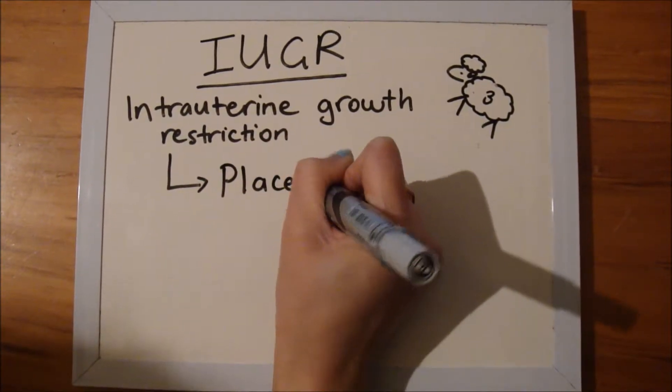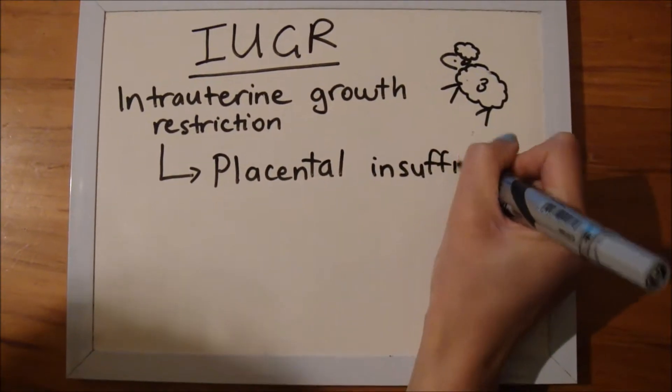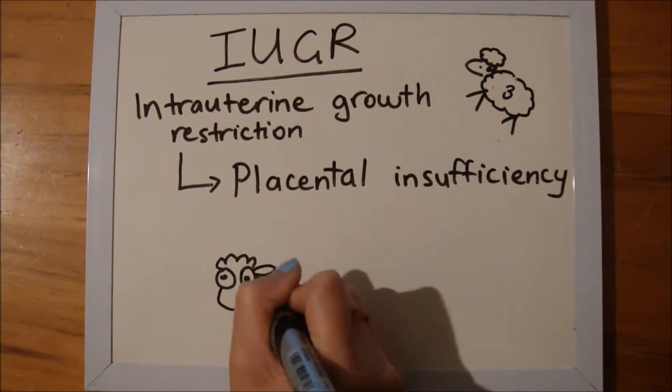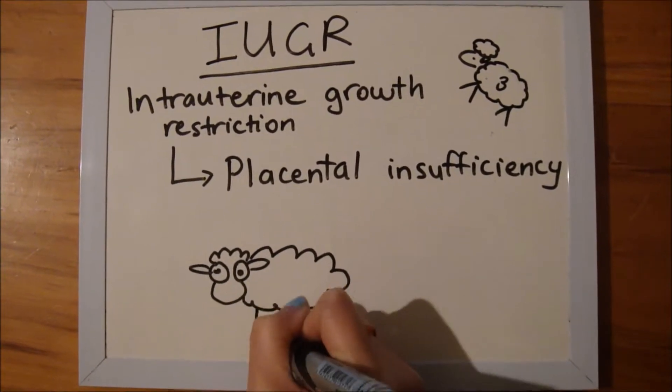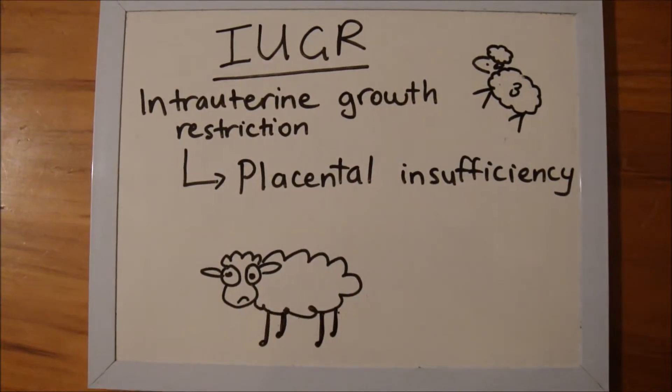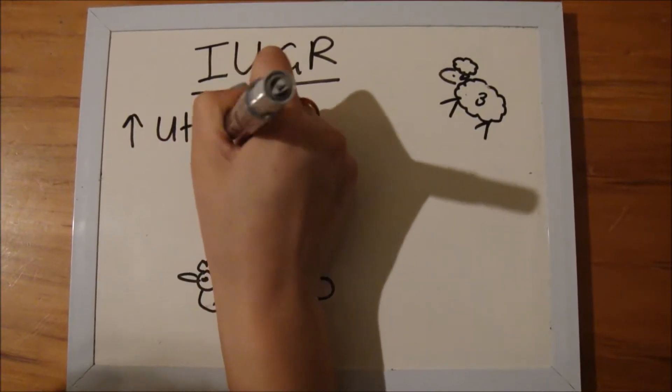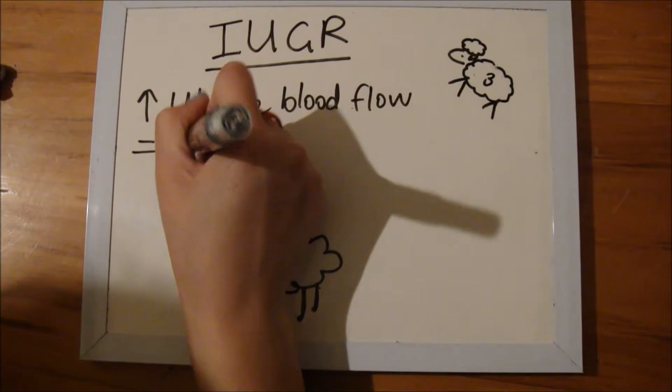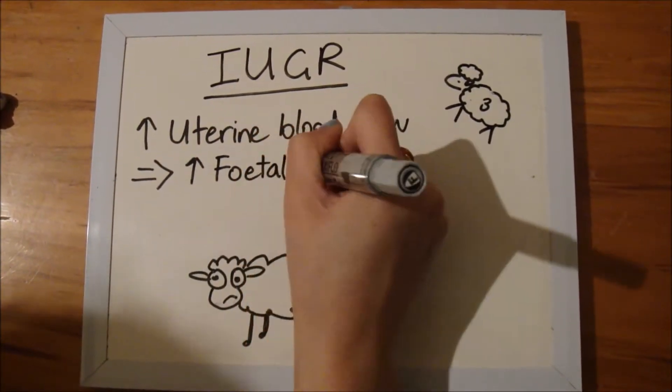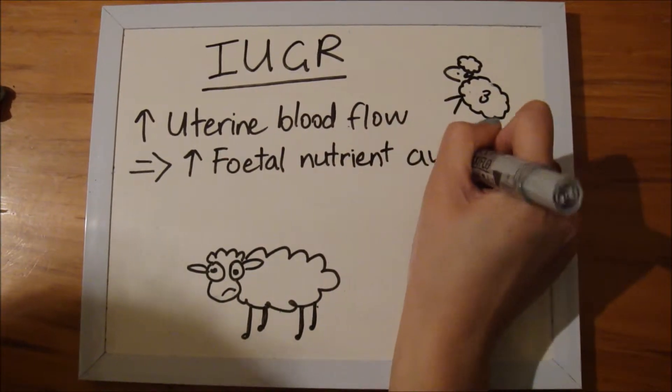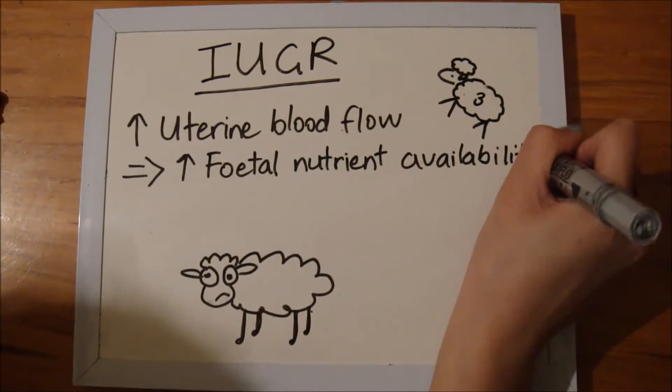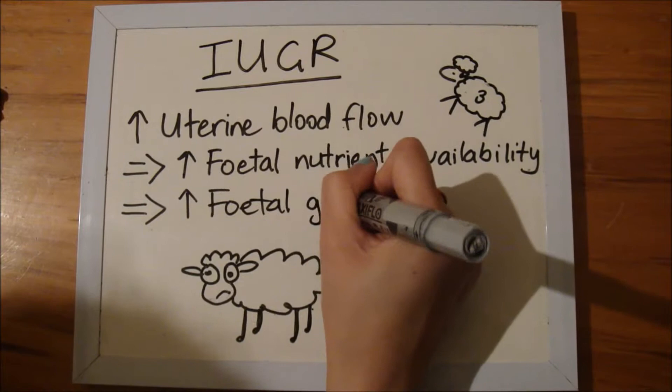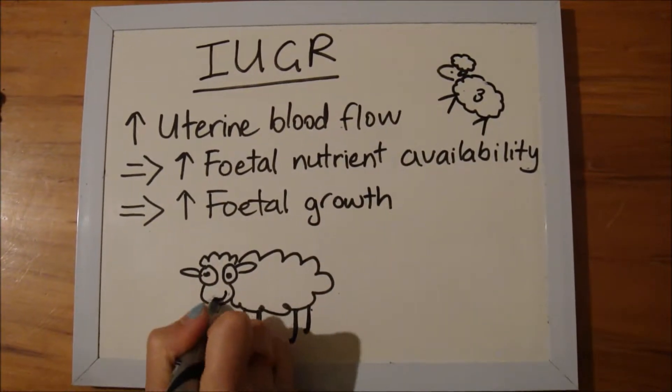It is known as intrauterine growth restriction. IUGR is secondary to placental insufficiency which interferes with the proper development of the fetus. The use of sildenafil increases uterine blood flow which improves fetal nutrient availability. This promotes fetal growth and therefore alleviates IUGR, thus contributing to fetal well-being. This makes a happy sheep.